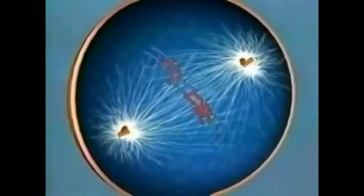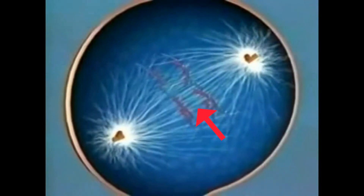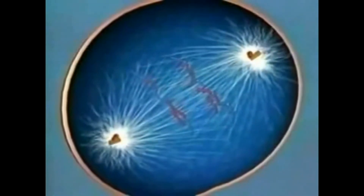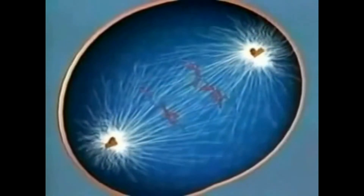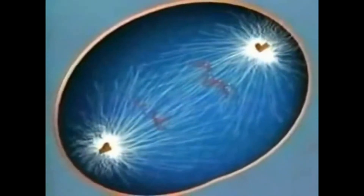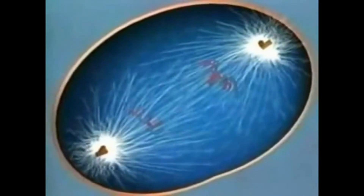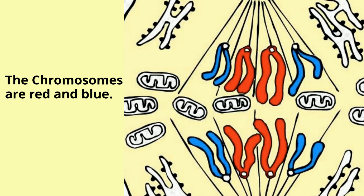In anaphase, the sister chromatids separate from each other and are pulled towards opposite ends of the cell. The protein glue that holds the sister chromatids together is broken down, allowing them to separate. Each is now its own chromosome.